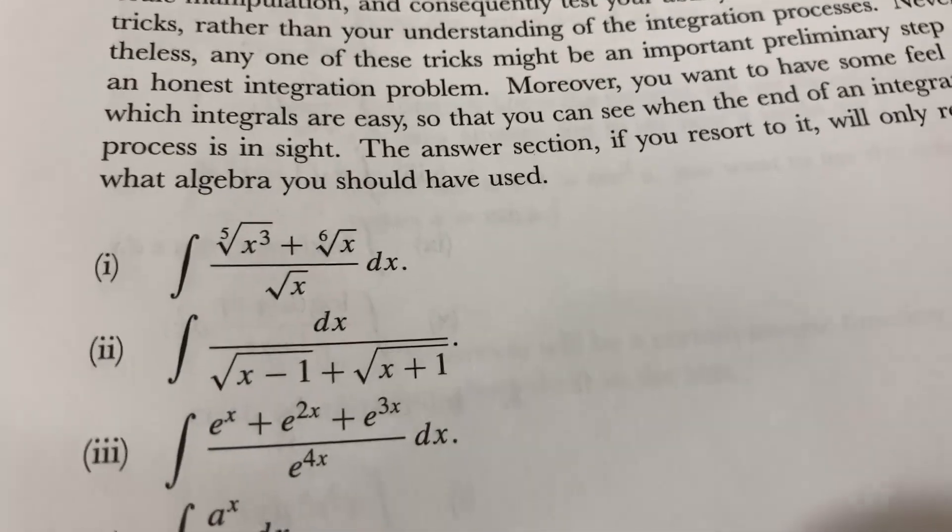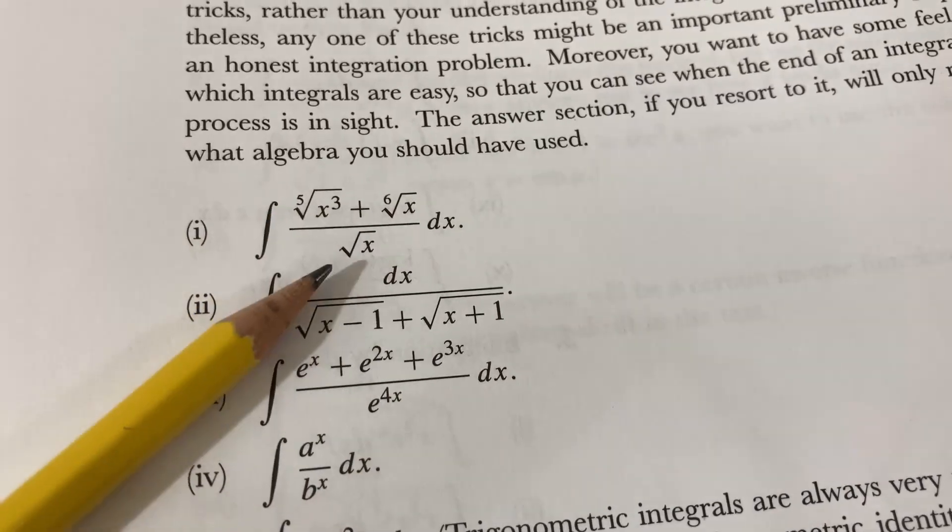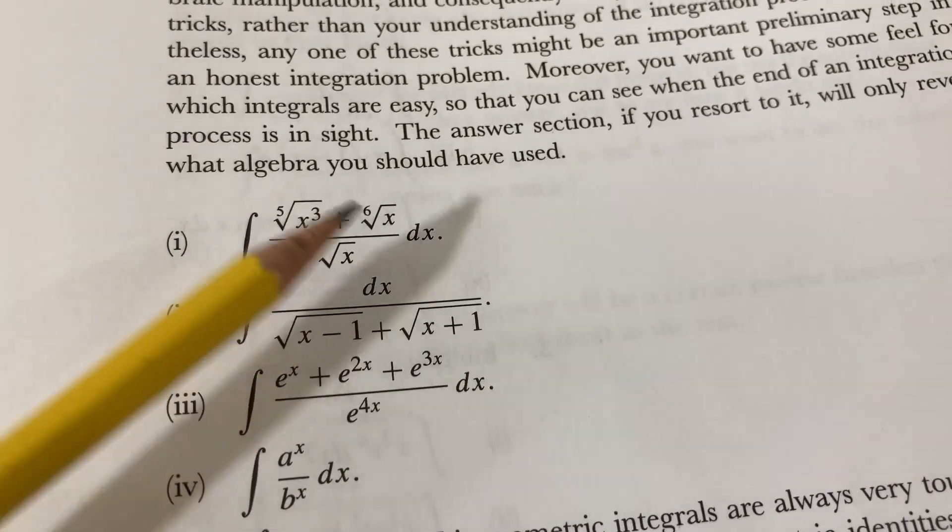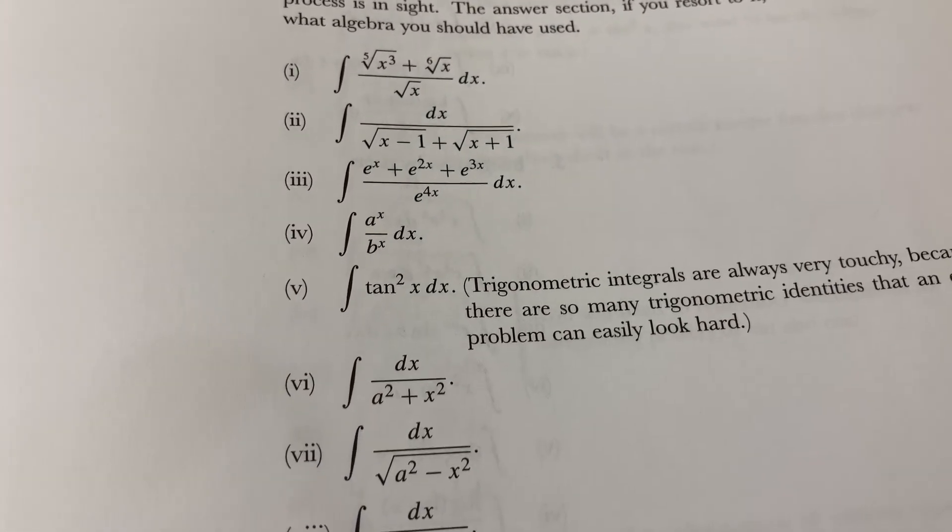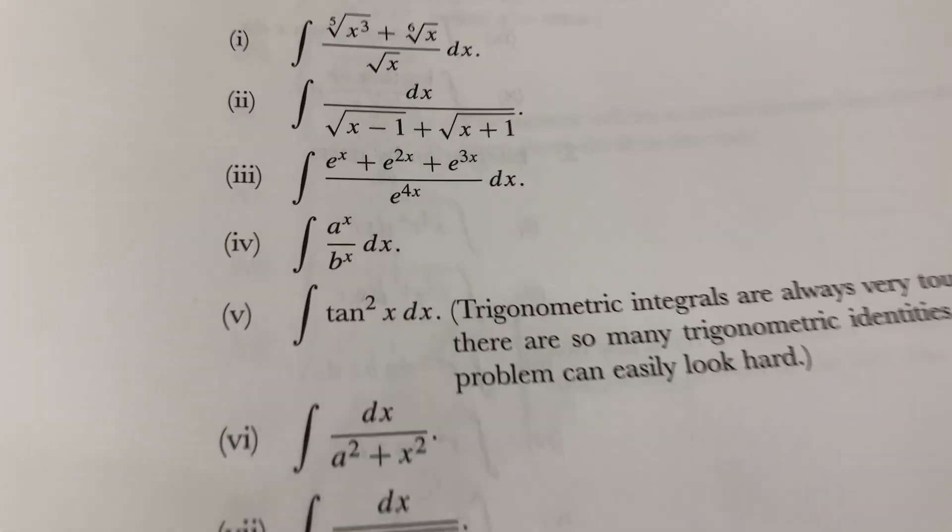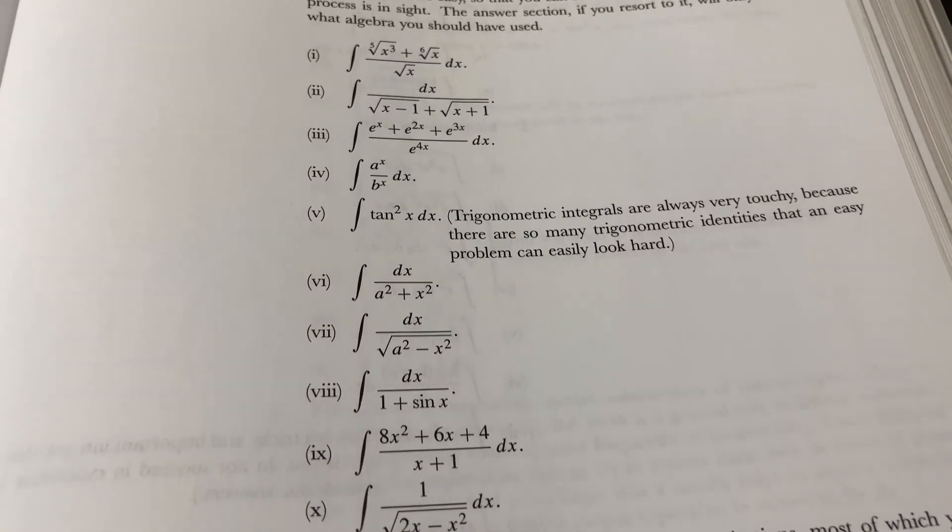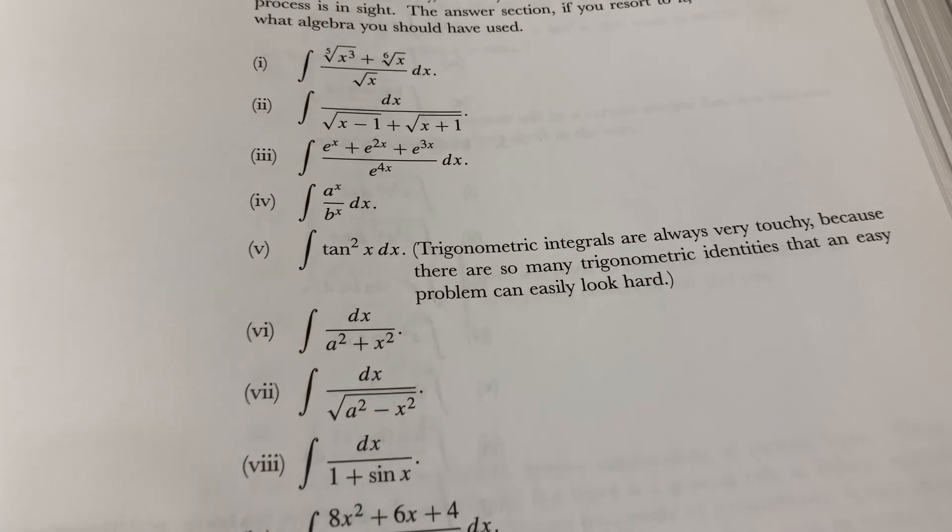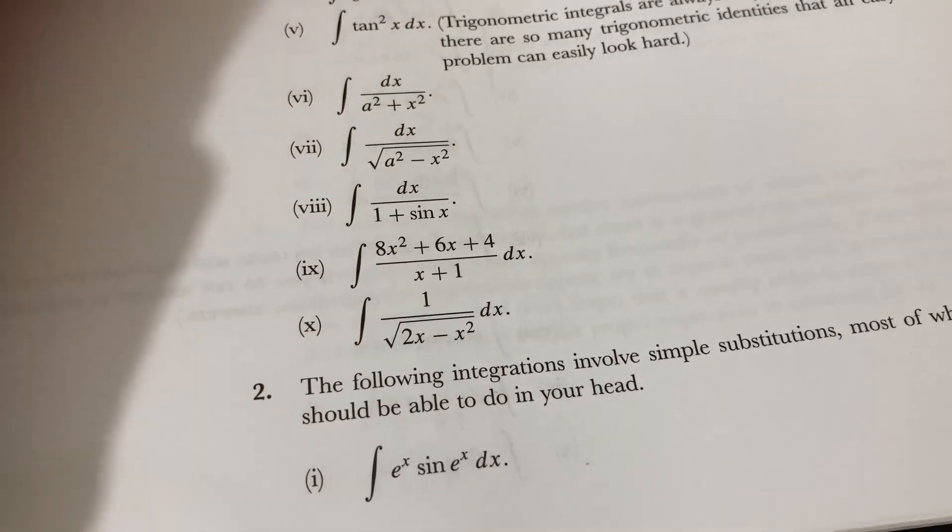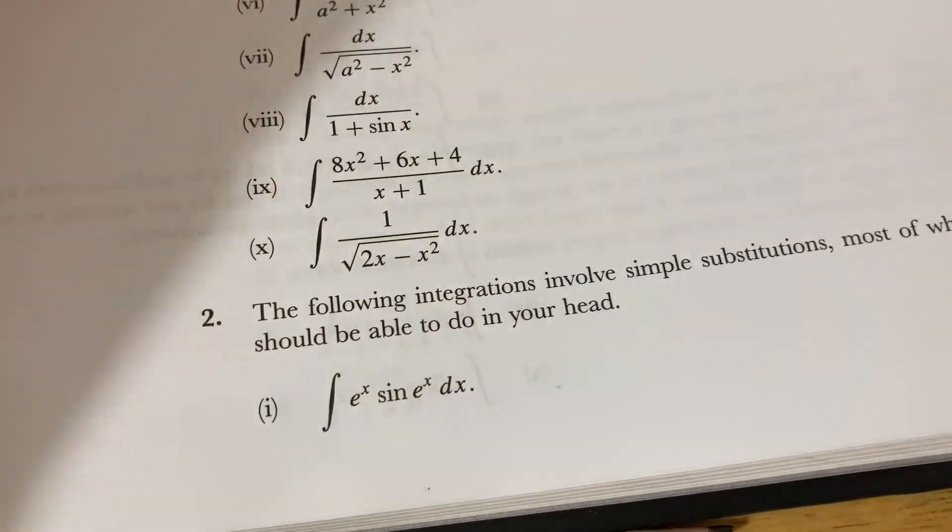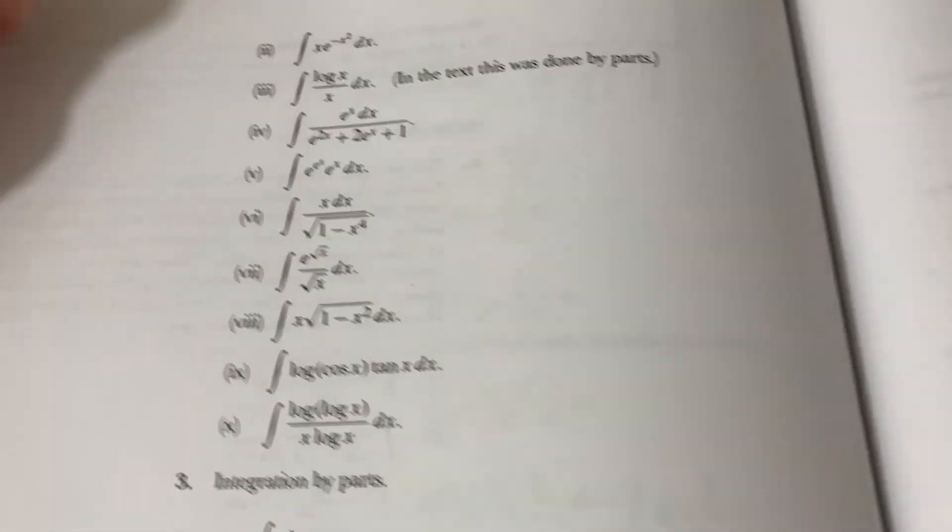So like this first one here, basically you would break it up, right? You would write it as this term over this term plus this term over this term, and then simplify and go from there. Pretty cool stuff, right? Look at that one. That one looks really cool. A to the X over B to the X. It's not fun stuff. 10 squared. Yeah, these are fun. Some of them are a little bit different. Some you might've seen like this is a really common one. E to the X, sine E to the X. I feel like I have a video for some of these, for a lot of these actually.